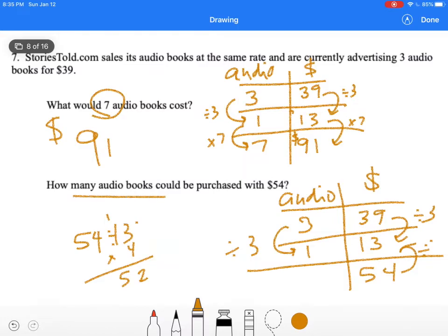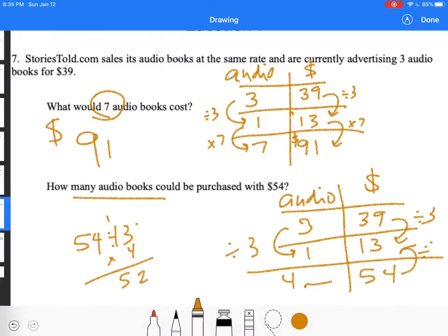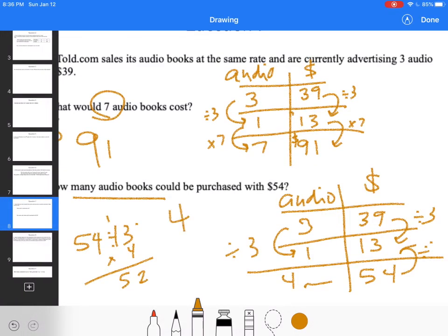So but it says how many audiobooks can be purchased with that. So four and some extra. But I can't buy part of an audiobook. So my final answer would be four. I can get four audiobooks with $54.